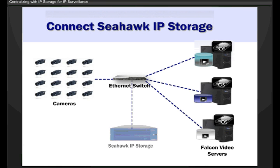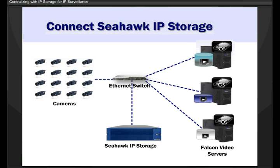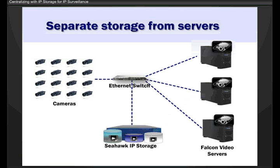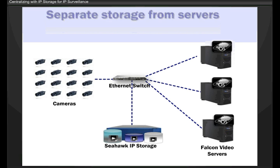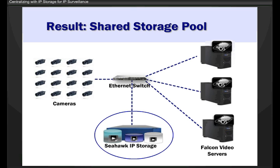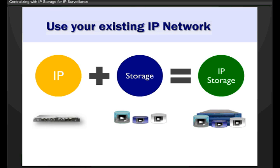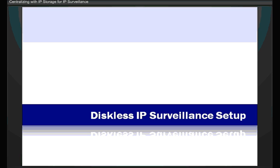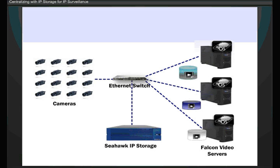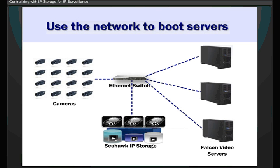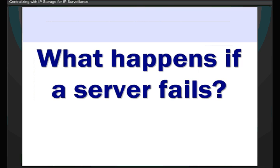Let's take a look at a better camera and server setup — same scenario as before. We'll add a Seahawk IP storage platform and take a look at what happens. You separate the storage from the servers and you create a shared storage pool. Shared means you don't have disks sitting around doing nothing — you're utilizing all of your storage resources. You can set this up on an existing network, so there's no special networks needed. And what if you set up diskless servers on the network? You can use that network to boot the servers. No disks. No downtime. More reliability. Better efficiency.